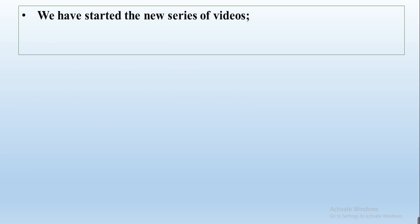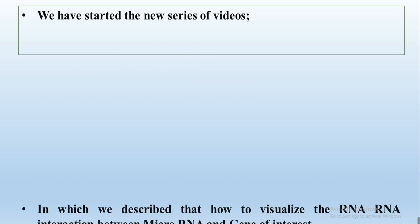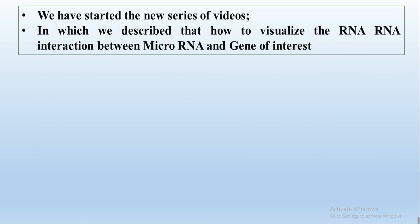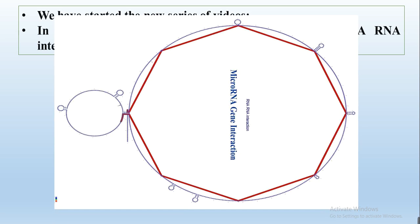We have started a new series of videos in which we will describe the RNA-RNA interaction, or how to visualize the RNA-RNA interaction between the micro-RNA and our gene of interest. This is the 2D visualization of our gene of interest and micro-RNA. It shows the rigs and small base pairs, the loops, and shows that this is my gene of interest. These lines show the micro-RNA that interact with my gene and regulate it, showing on which base of my gene the micro-RNA interacts and regulates it.